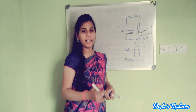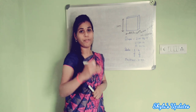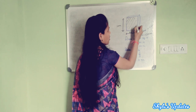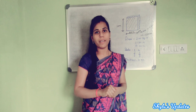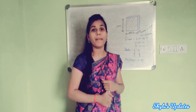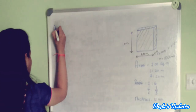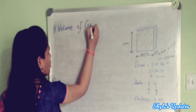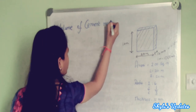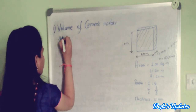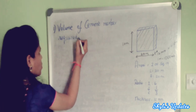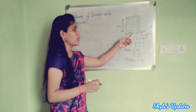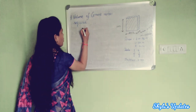Quantity of plaster means we have to find the quantity of cement, quantity of sand, and also the quantity of water used in this area. The first step is to calculate the volume of cement mortar. The formula for volume of cement mortar is: area into thickness.